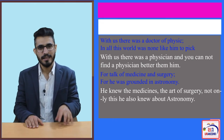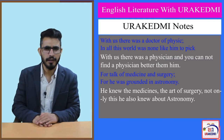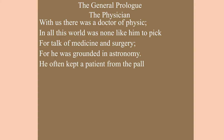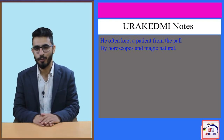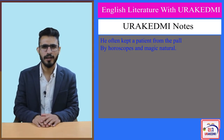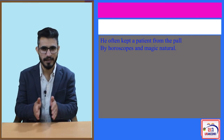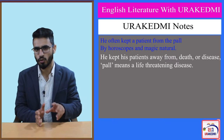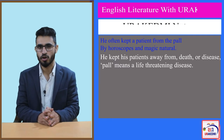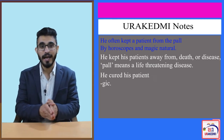There is a principle that when reading a poem or portrait, the text itself is the best explanation of its words. We will find what kind of astronomy this physician knew. 'He often kept a patient from the pall by horoscope and magic natural.' He kept his patients away from death — the pall meaning tomb or death — through horoscope and through magic natural, meaning natural magic.